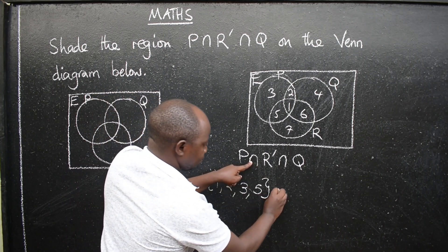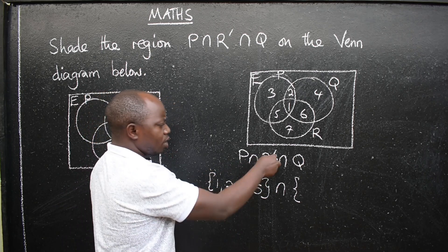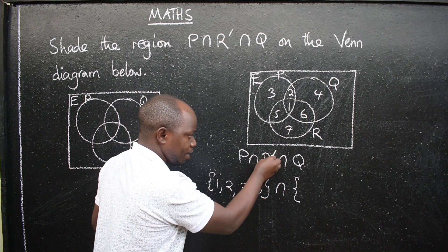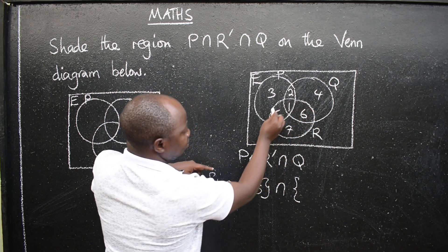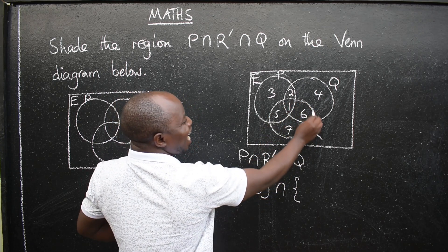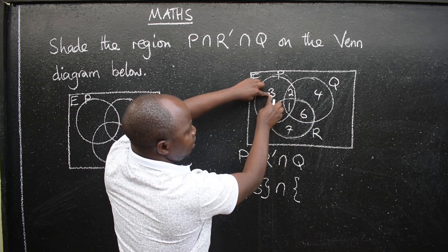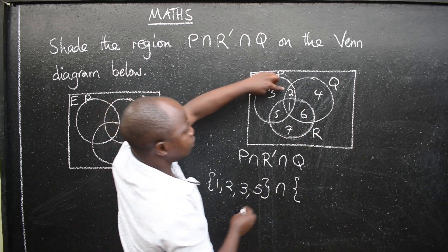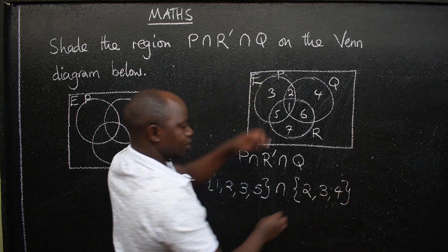Intersection. You come here. R complement. We are talking about elements that are not in R. That is R complement. Elements that are not in R. So let's go back to the diagram. This is R. Now we want elements that are not here. Elements that are outside in short. So what elements are those that are outside R? 3, 2, and 4 are not in R. So that is what we are going to have here. So we have 2, 3, and 4.